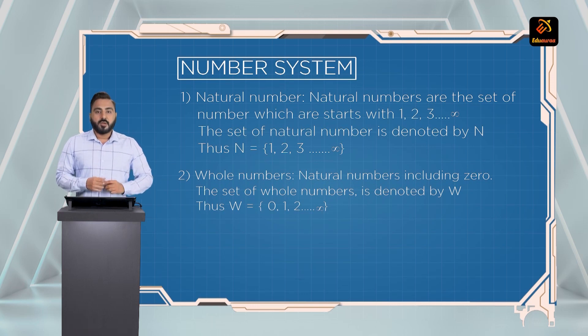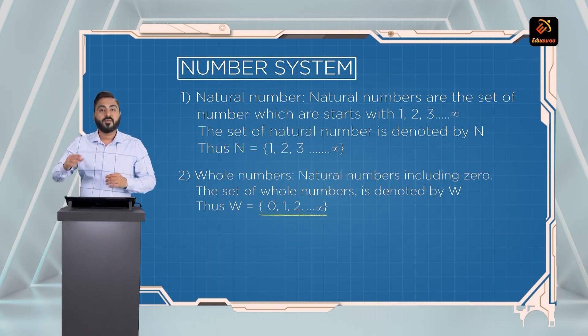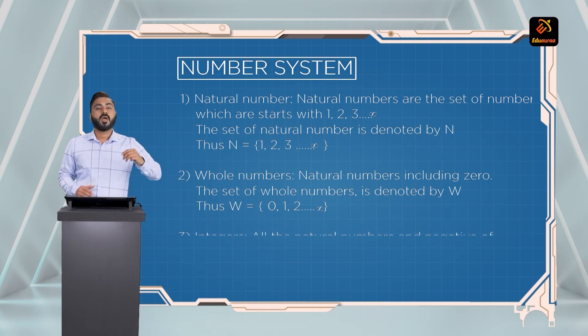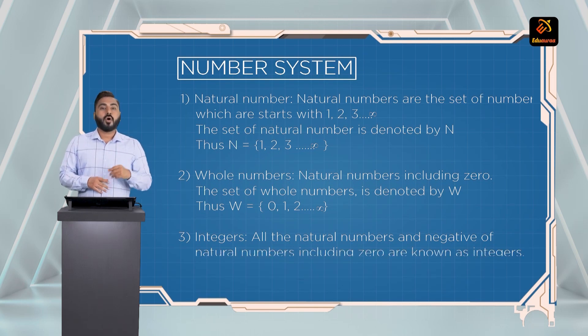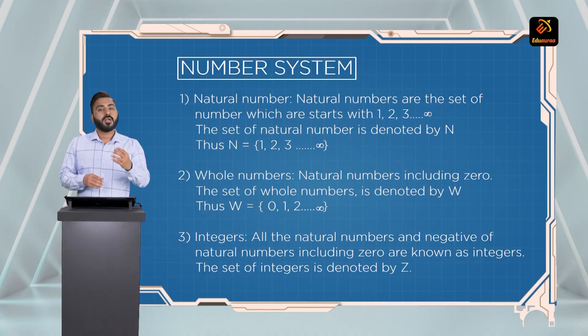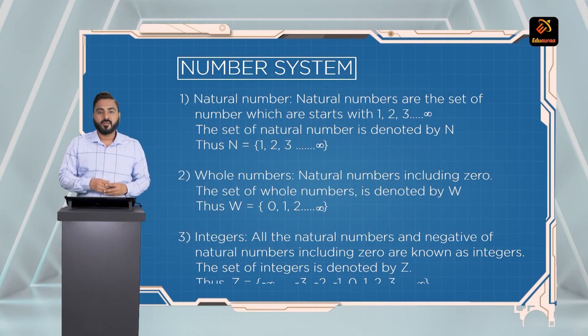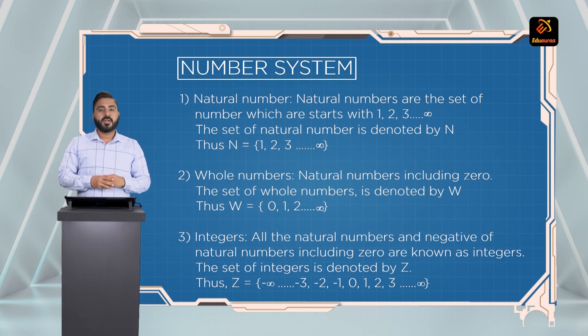W is equal to {0, 1, 2, 3, 4, 5, ...} up to infinity. Now let's move on to the next type of number — integers. What are integers? All natural numbers and negative of all natural numbers, including 0, are integers. Integers are all set of numbers from minus infinity to plus infinity including 0.